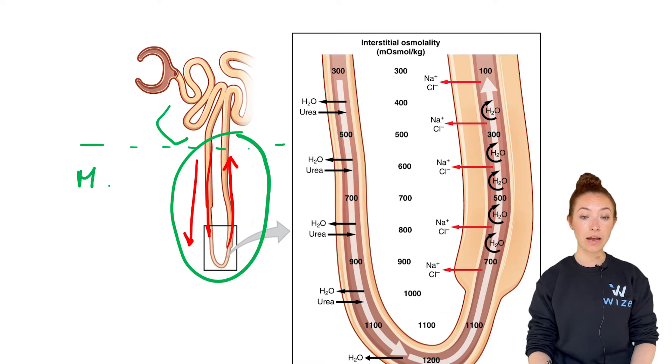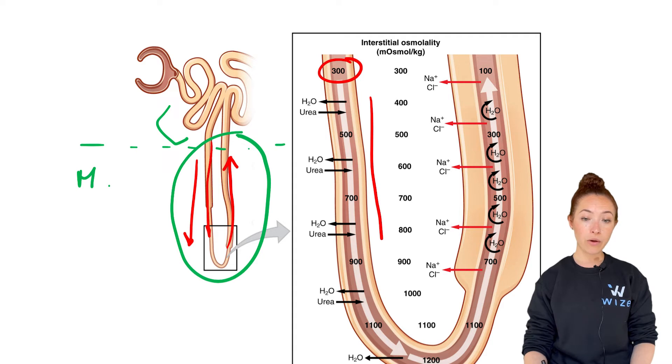This is what we see here: as the filtrate comes in, its osmolarity is around 300, but as it goes further down into the descending loop of Henle it becomes very concentrated. Here at the bottom it's even as high as 1200.